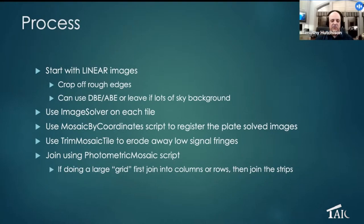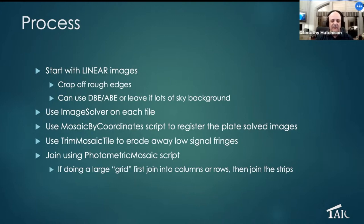Then you use a script called Mosaic by Coordinates to register those images based on the plate-solved solution — no trying to align stars or doing anything with the images themselves except using the plate-solved coordinates. We then use Trim Mosaic Tile to crop off any low-signal fringes around the edges, and then use the Photometric Mosaic script to join them together.